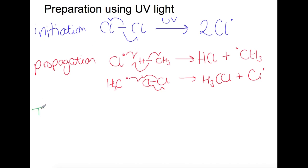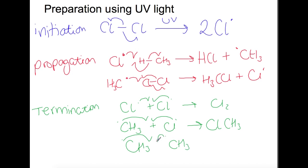The final step is termination. And this is where two radicals can join together to terminate the reaction. So we have three choices. We can either have two chlorine radicals reacting to form a chlorine molecule again. We can have a methyl radical reacting with a chlorine radical to produce more chloromethane. Or you could have two methyl radicals reacting to produce ethane.